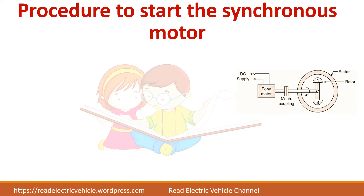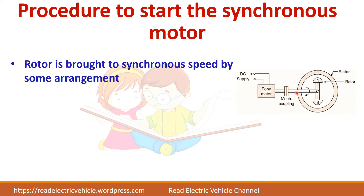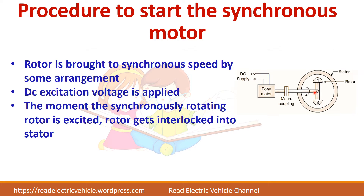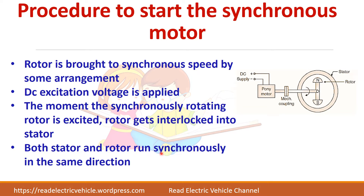What is the procedure to start the synchronous motor? First, bring the rotor to synchronous speed by some arrangement. Then give DC supply for the field winding so that it will get north and south polarity. Once DC voltage is given, the north pole of the rotor and south pole of the stator get locked together, because both are rotating at synchronous speed. So both rotor and stator run at synchronous speed in the same direction.